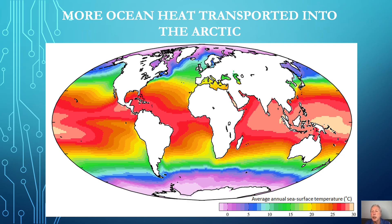First we need an overview of how the world's ocean temperatures vary. The oceans are warmest in the tropics, seen in red, and due to the sun's most intense heating, surface temperatures average 20 degrees centigrade or 68 degrees Fahrenheit. Ocean temperatures decrease towards higher latitudes as the Earth's curve and axis tilt decrease solar heating.